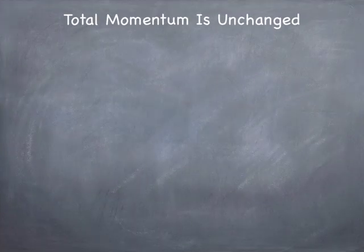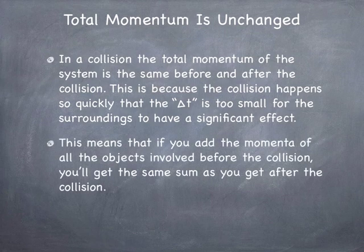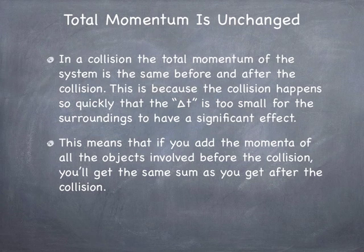If you think of the system as the two objects that are colliding as the total system, the momentum of the entire system is unchanged. That just means that the net force times delta t is going to be negligibly small, because the internal forces don't contribute to the net force, and the external forces times this little change in time don't significantly change the total momentum. That's the idea. It's useful because if you add up the momentum of all the objects before the collision, you get the same thing as when you add up the momentum after. Usually that's two objects, though in principle there's no restriction. This also works both in one-dimensional and two- and three-dimensional collisions.